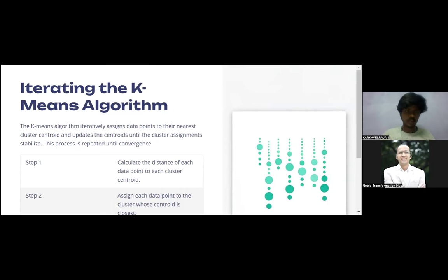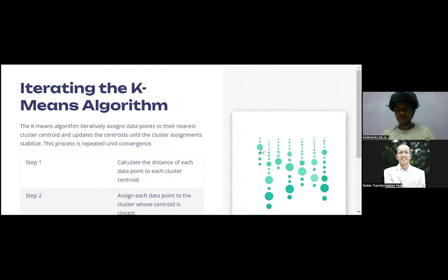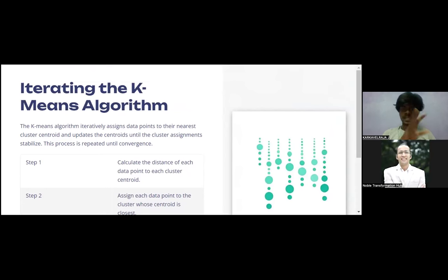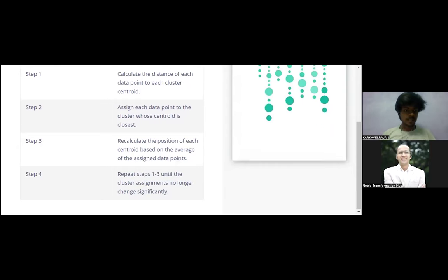We assign data points that are closer to a centroid to that cluster. Step two: recalculate the position of each centroid based on the average of the assigned data points. Once assigned, we take those values and based on their average — using Euclidean distance calculations — we reassign and move the centroid, finding which data points are closest to form the cluster.